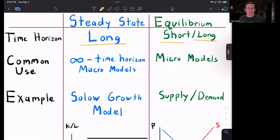So what are some common uses of each that we can think about? Well, if we're talking about a long run steady state, generally we're talking about a macro model. Generally we're talking about something closer to an infinite time horizon macro model.